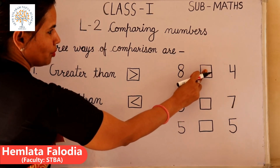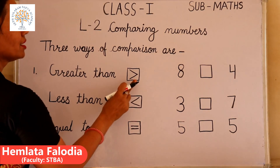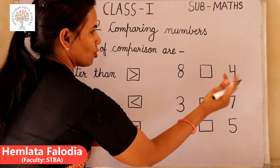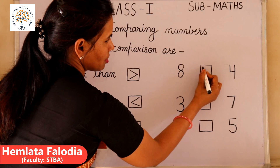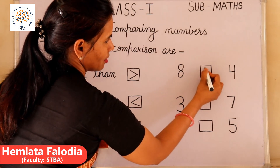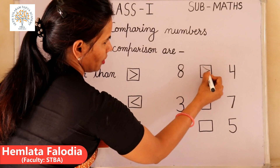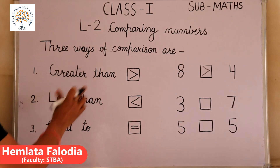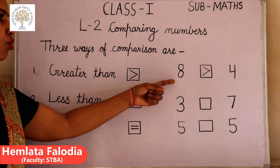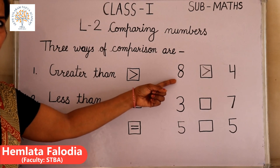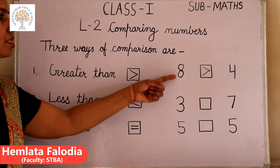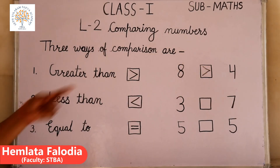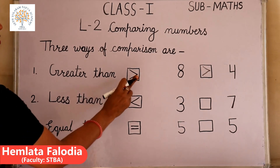Here, which sign will we put? This is the sign of greater than. So eight is greater than four — in this box we will put the sign of greater than. Greater than means more in numbers. If the first number is more, it means the first number is greater than the other. This is the sign of greater than.